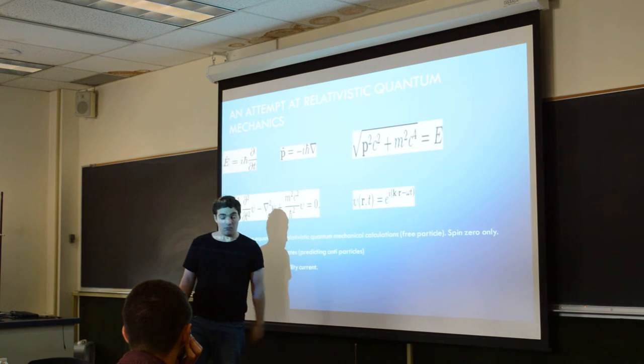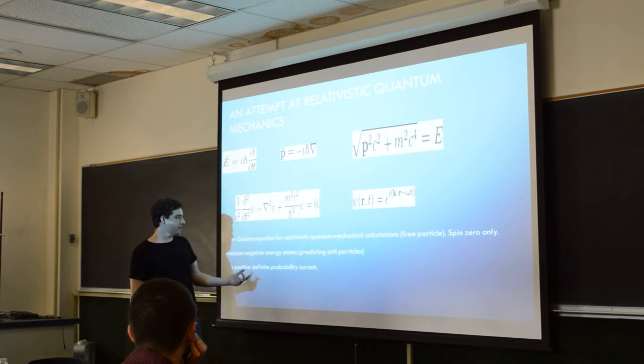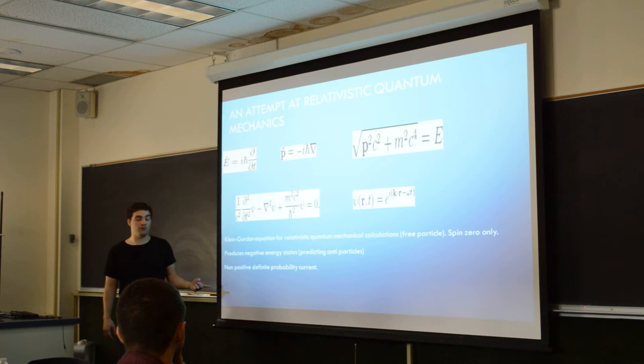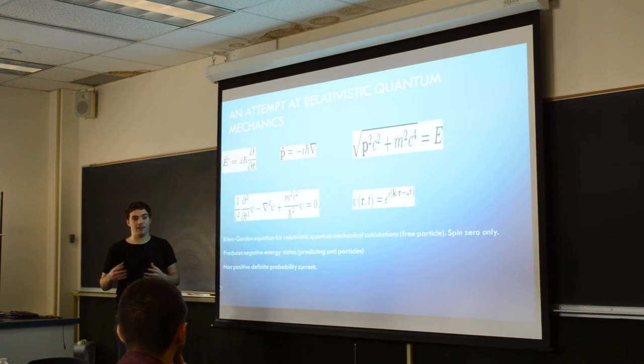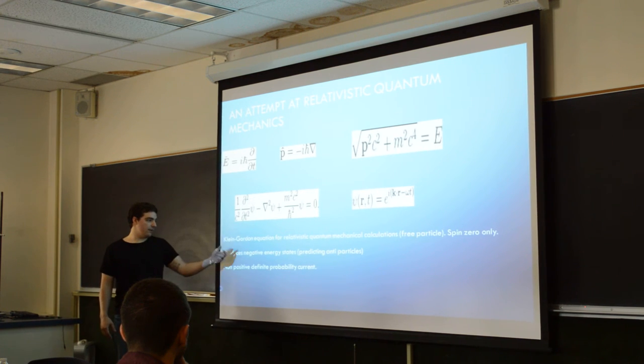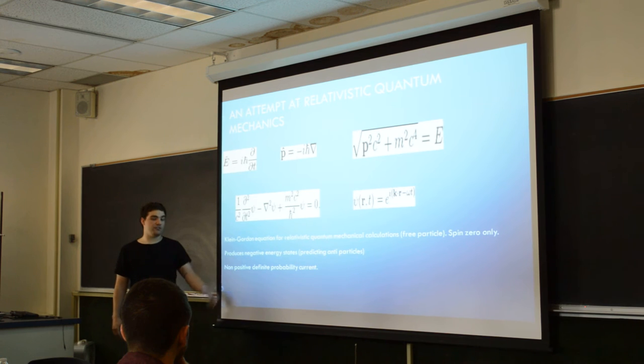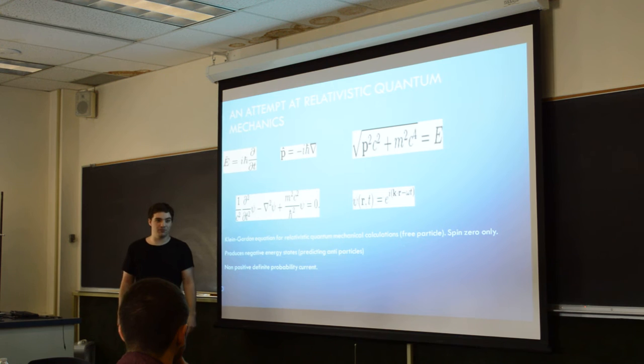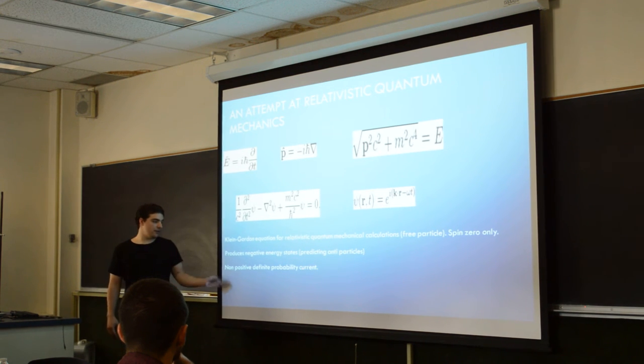Your solutions just end up being regular plane wave solutions. But the problem is it doesn't account for spin, so basically spinless particles. The Higgs boson was the first fundamental particle that can actually be described by this equation, given that you're not having any boundary potentials or anything like that. It produces negative energy states, which they thought was a problem at the time, but that was just kind of a precursor to antiparticles. The biggest problem is you have negative probability densities, which is not allowed.